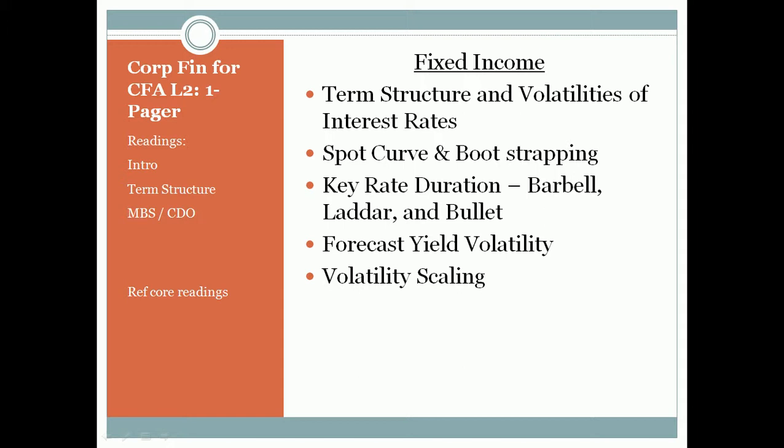Historically, yield curves have taken three fundamental shapes: they could be normal, which slopes upward; they could be flat; or they could be inverted, sloping downward. A normal yield curve is one in which long-term rates are greater than short-term rates — if you invest money for a longer time, you get a better return. An inverted curve means long-term investments give less return.